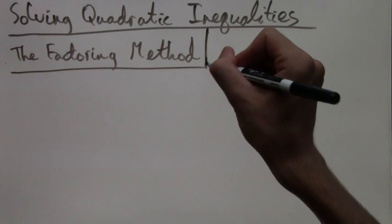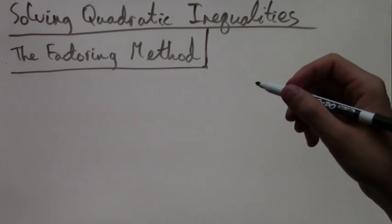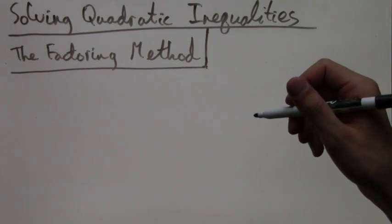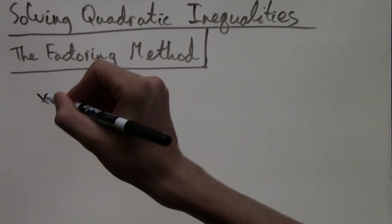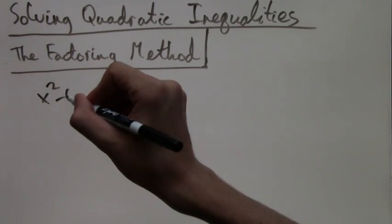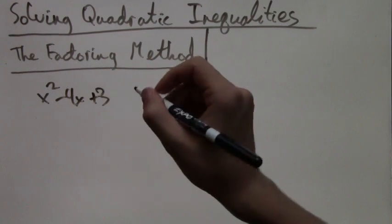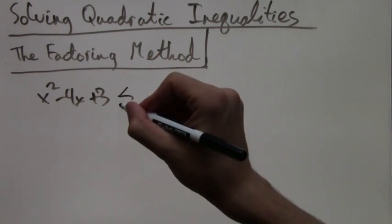So let's just do an example. The example will be x squared minus 4x plus 3 is less than 0.